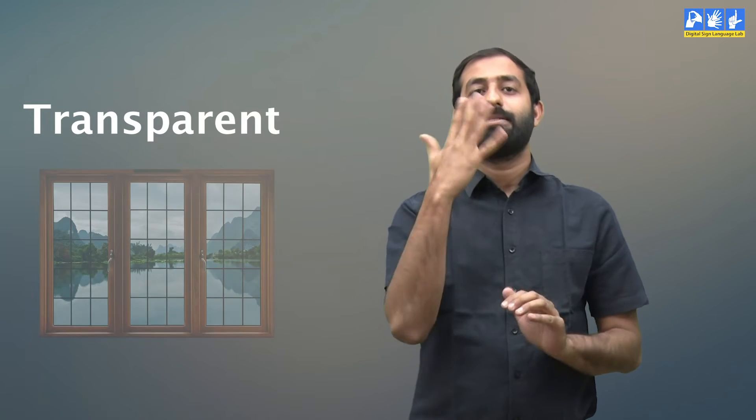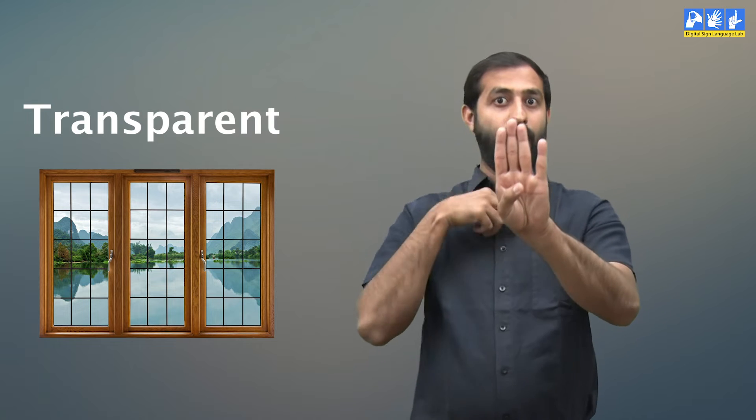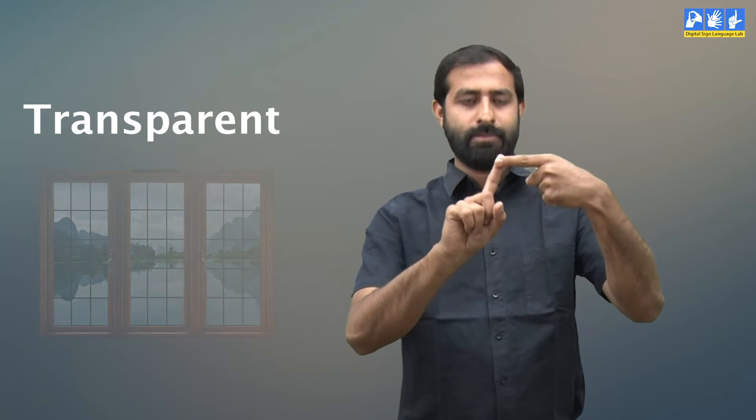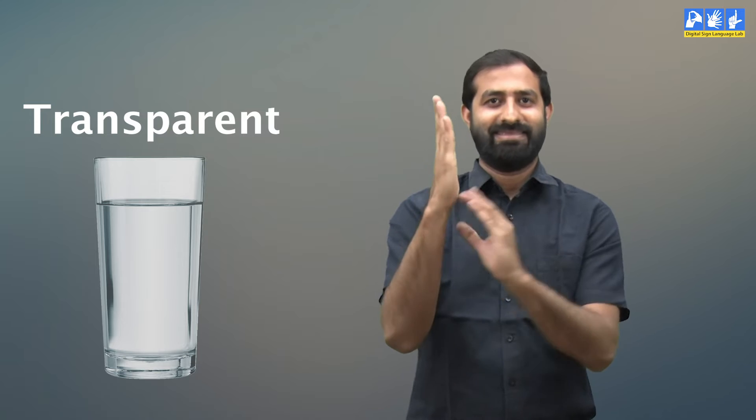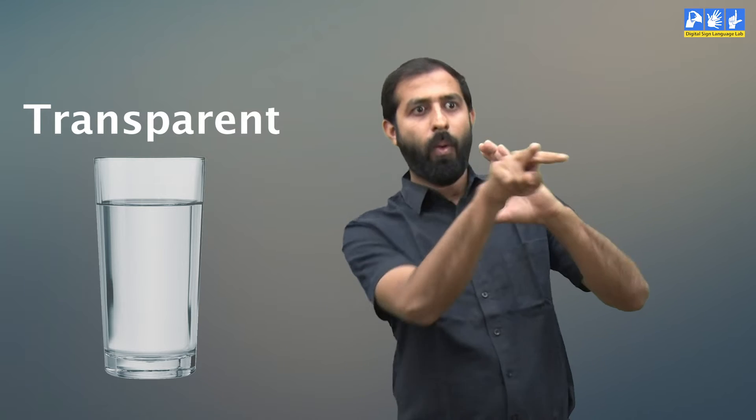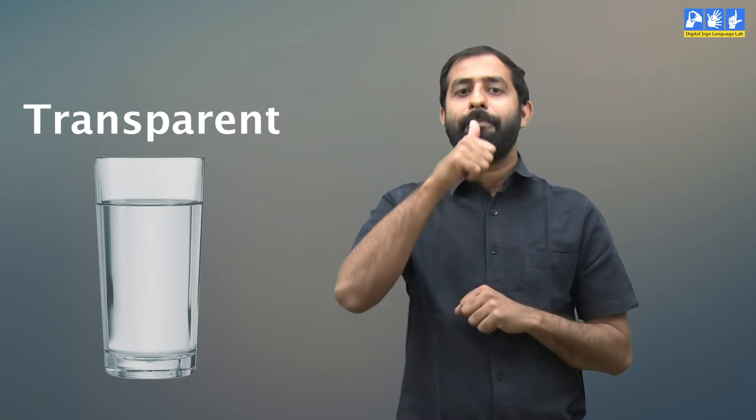We all have glass windows in our house. It is an example of transparent material as we can see through them clearly. Another example is water glass which is transparent to all visible light. Water is also an example of transparent materials as we can see through it clearly.